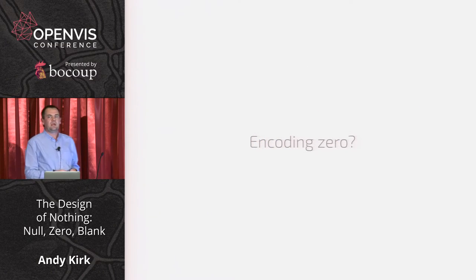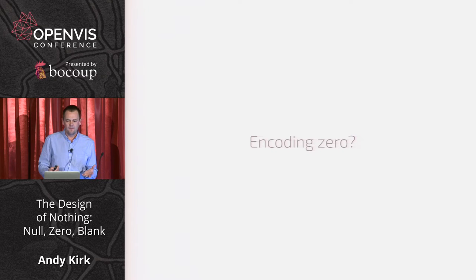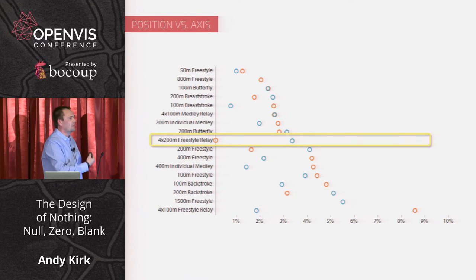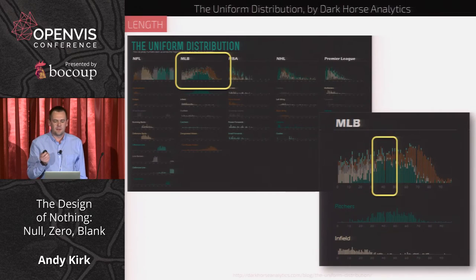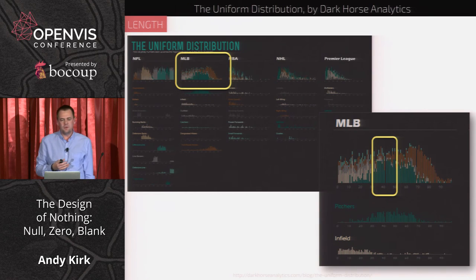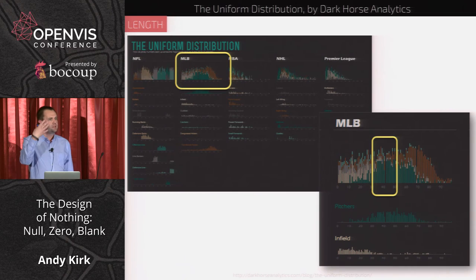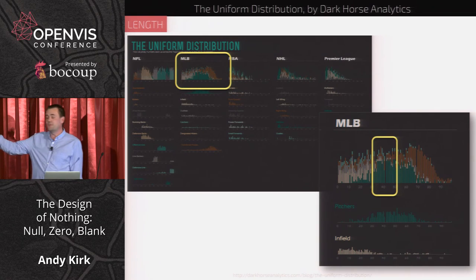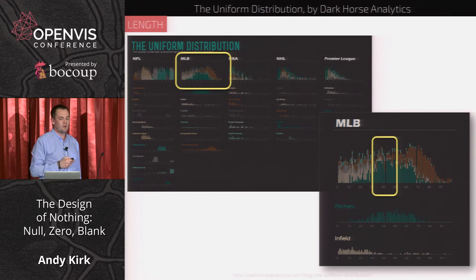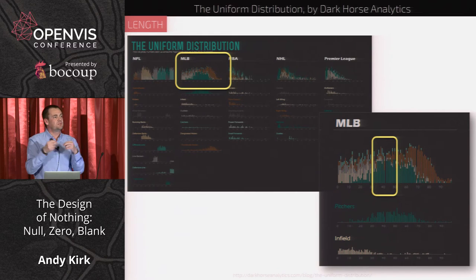So how might we encode zero? Running through the classic repertoire of marks and visual properties, we have quite a few options. The position along an axis of a mark or hollow circle lets us see the zero-ness of that mark. Bar charts are trickier — in this project showing the uniform distribution of jersey numbers in sports, the number 42 is absent, representing the retired Jackie Robinson jersey. But that only exists because we've kept 42 on the x-axis, giving it a home.